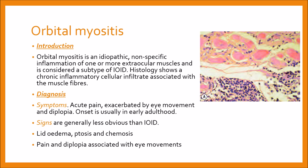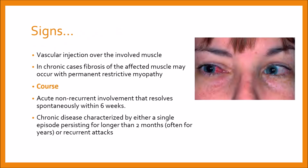Diagnosis is based on symptoms and signs. Symptoms include acute pain exacerbated by eye movement and diplopia. Onset is usually in early adulthood. Signs are generally less obvious than IOID, and include lid edema, ptosis, and chemosis. Pain and diplopia are associated with eye movements. There is also vascular injection over the involved muscles. In chronic cases, fibrosis of the affected muscles may occur with permanent restrictive myopathy.